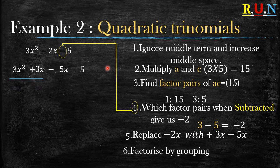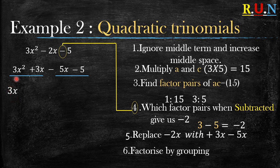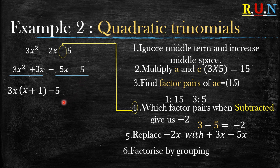Factorize two terms separately. For the first two terms, the common factor is 3x. So 3x² divided by 3x is x, and 3x divided by 3x gives positive 1. For the last two terms — negative 5x minus 5 — the highest common factor is negative 5.